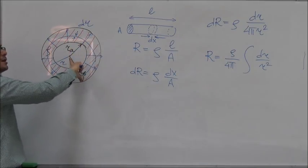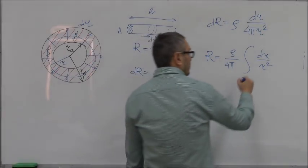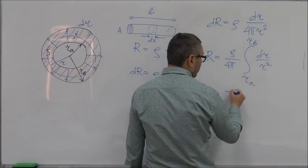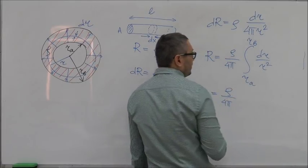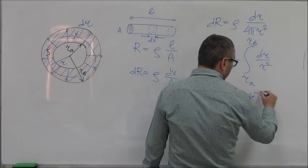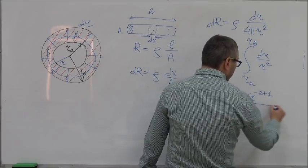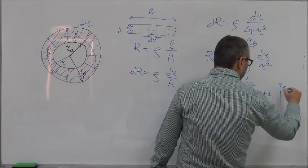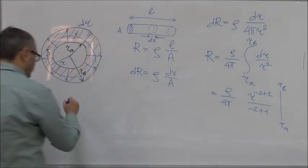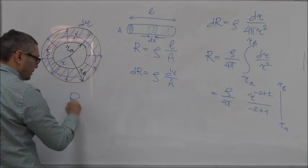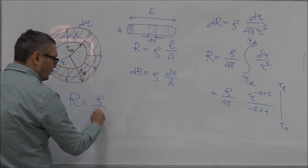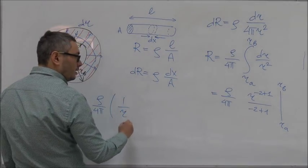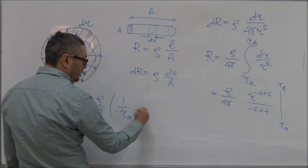This is equal to ρ/(4π) times R^(-2+1), which is R^(-1), evaluated from RA to RB. Finally, we can say that the resistance R is equal to ρ/(4π) times (1/RA - 1/RB).